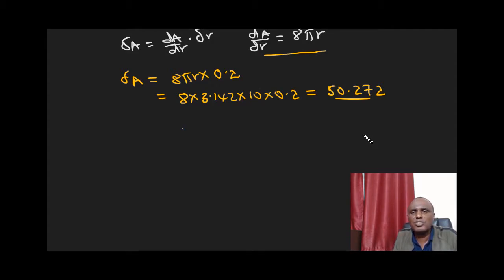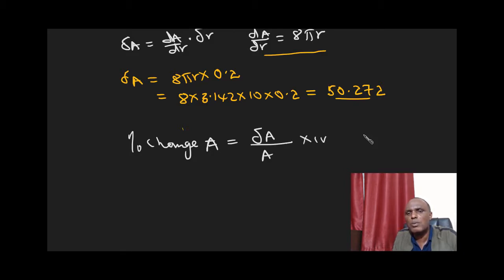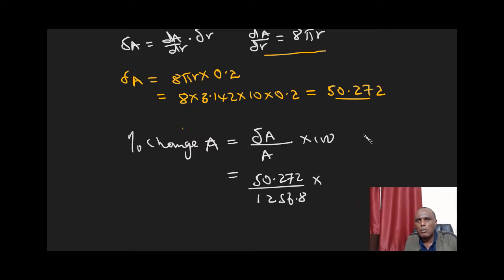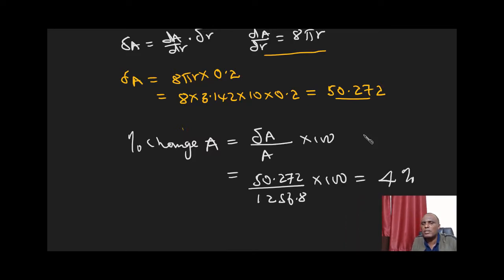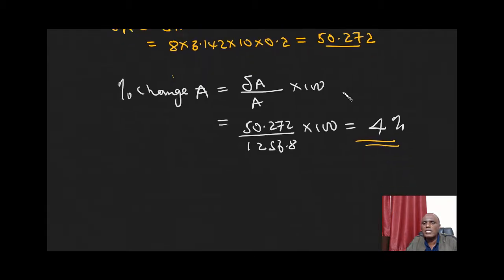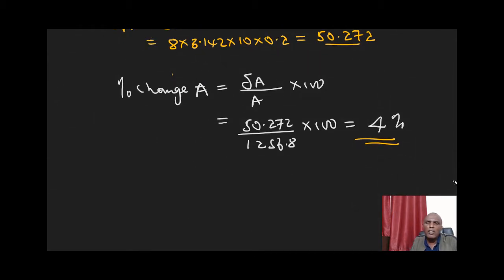We are required to express this change as a percentage, which equals (δA / A) × 100 = (50.272 / 1256.8) × 100 ≈ 4%. Since this is positive, this represents an increase of 4% in the surface area after increasing the radius by 0.2 cm. The problem is now solved.